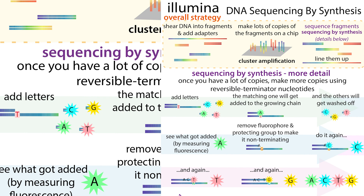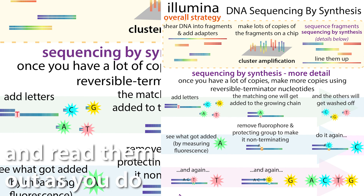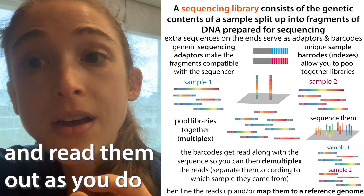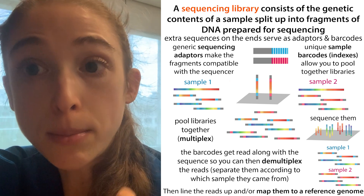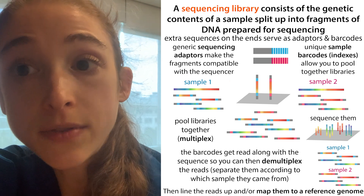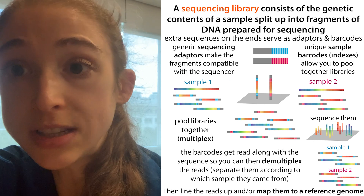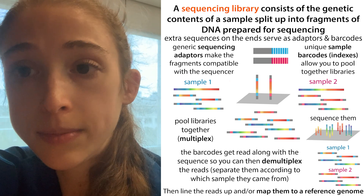In order to actually sequence those pieces, you're going to put adapters onto the ends. These adapters are going to let them bind to complementary sequences on the surface of a chip, and then when they're bound to that surface, you can make lots of copies of them. These adapters can also serve as a place where you can put barcodes, and so each of your samples is going to have a unique barcode.